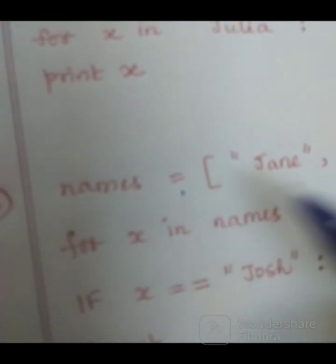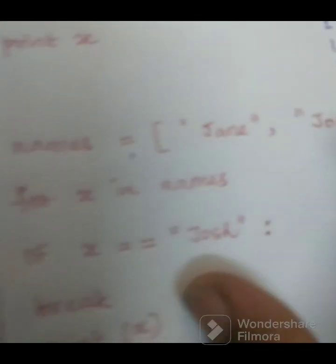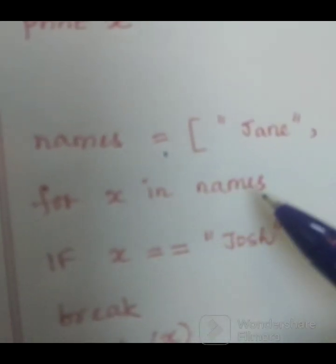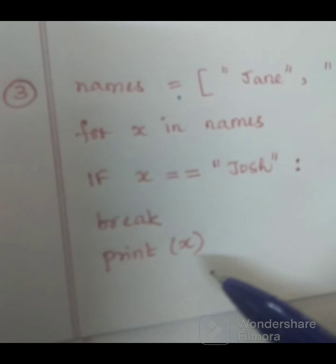See for example, names equal to four names: Jane, Joe, Josh, Jeremy, James. For x in names, if x equal to Josh break, print x. This is the program.